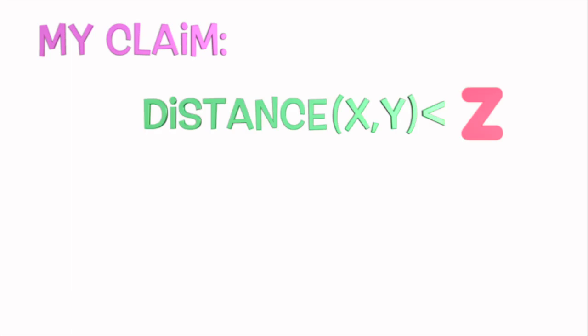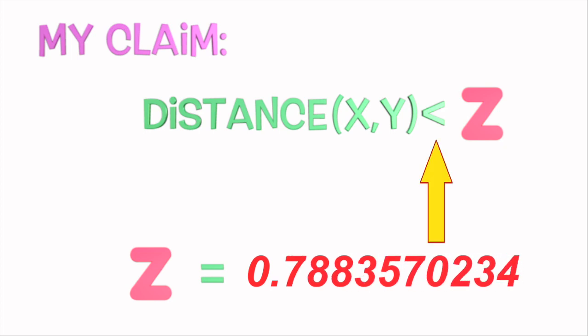And suppose that for all of these numbers, I claim that the distance between x and y is smaller. You may even call out an infinite amount of numbers, however small. And for all infinity of them, my claim is unchanged. x and y are closer than any of your numbers.